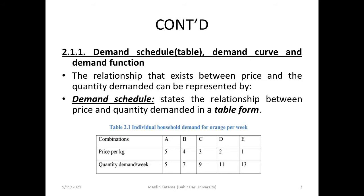The relationship between price and quantity demand can be represented in table form. This is Table 2.1: Individual household demand for oranges per week.